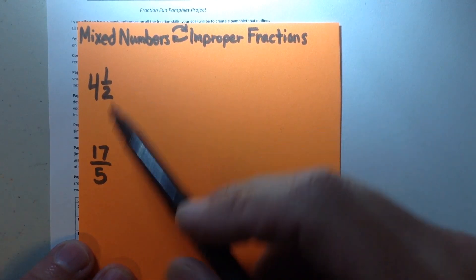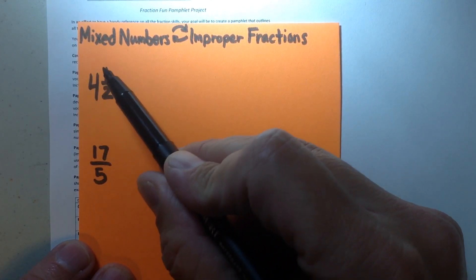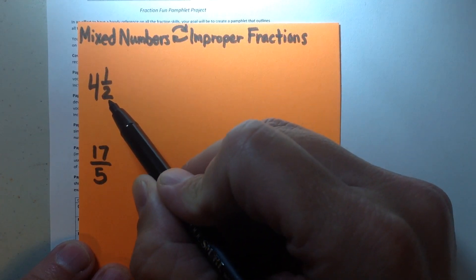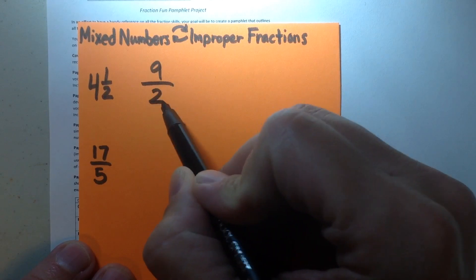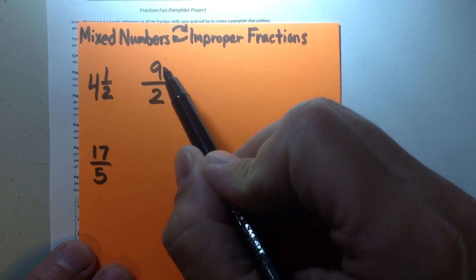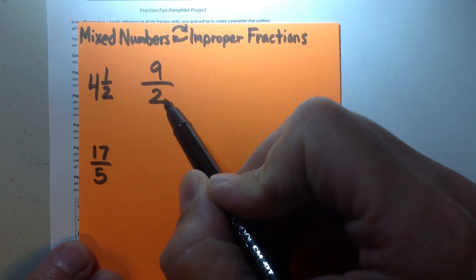So I know that to multiply mixed numbers, I would multiply my denominator times my whole number, and then add my numerator to get my new numerator. So 2 times 4 is 8 plus 1 is 9, and my denominator would stay the same. So I've changed my mixed number to an improper fraction, and you notice that I used all the vocabulary that was described.